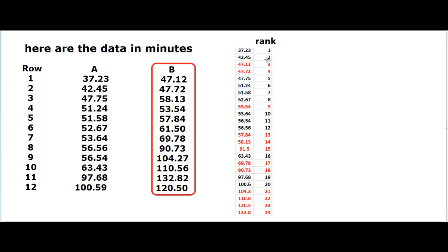What happens here? The black ones are the ranks for route A, and the red ones are the ranks for route B. Here in this column, we have written the ranks for the values in A, and here in the column B, we wrote the ranks for the values in B.